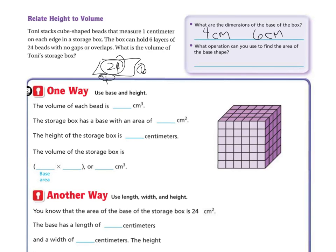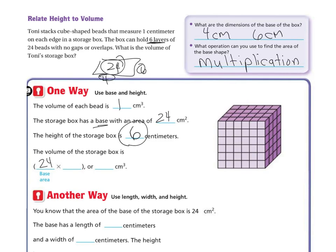What operation do you use to find the area of a shape? Multiplication. The volume of each bead is 1 centimeter cubed. The storage box has a base with an area of 24 centimeters squared, and the height is 6 centimeters, since it holds 6 layers. So the volume of the storage box is 24 times 6. 24 times 6: 6 times 4 is 24, 6 times 2 is 12 plus the carried 2 is 14. So the volume is 144 centimeters cubed.